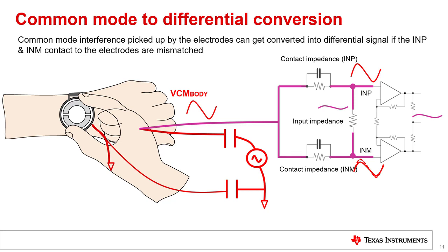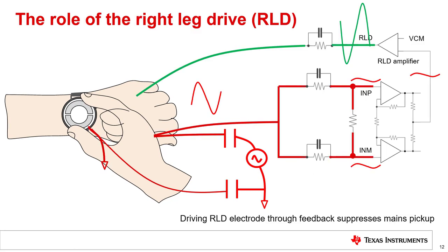The way to reduce the common mode to differential conversion is to have low contact impedance and to maximize the AC input impedance of the ECG signal chain. Next, let's look at the role of the RLD, or right-leg drive electrode. The RLD amplifier drives the body through a third RLD electrode. The signal on the RLD electrode is inverted with respect to the common mode interference being picked up by the body, and its effect is to cancel or suppress the common mode pickup.